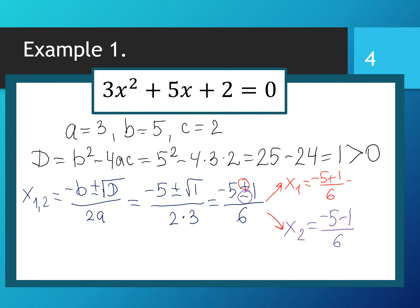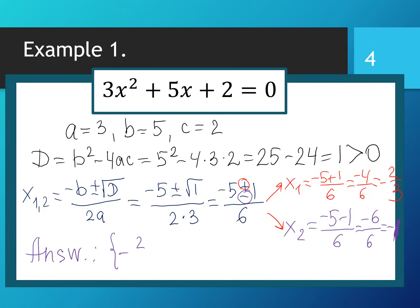For x₁: (-4) / 6, cancel out 2, so the answer is -2/3. For x₂: (-6) / 6 = -1. So our quadratic equation has two real roots: -2/3 and -1.